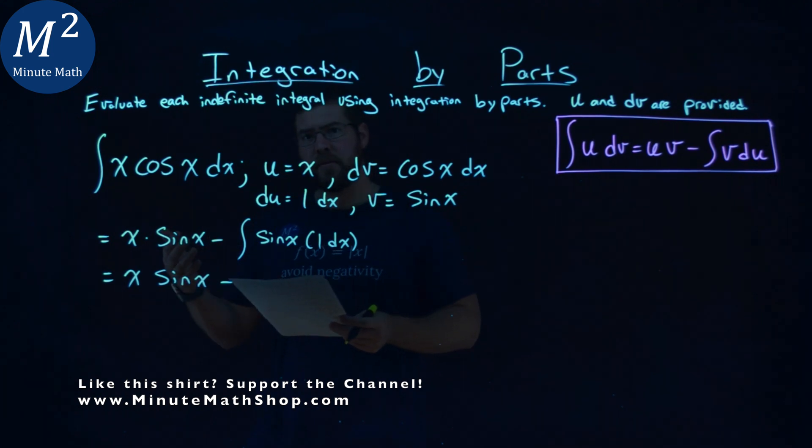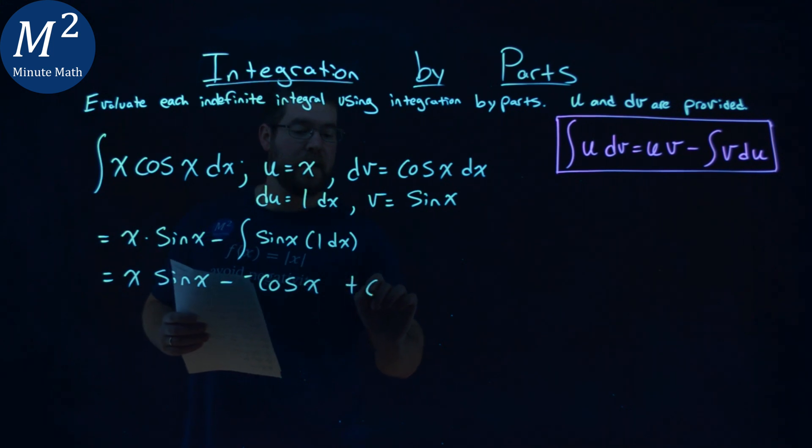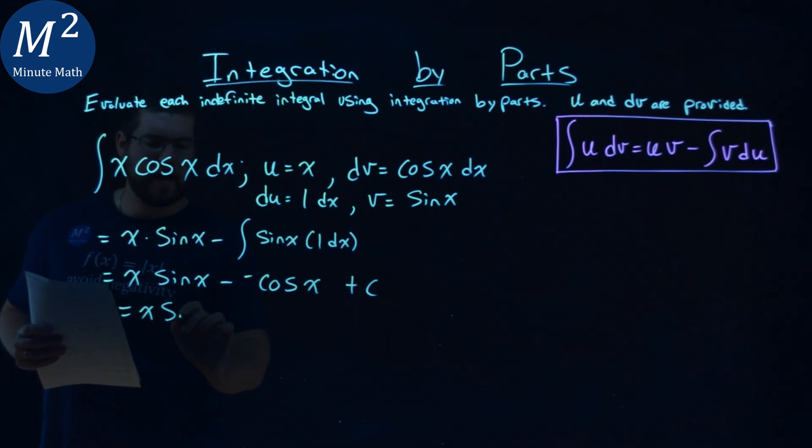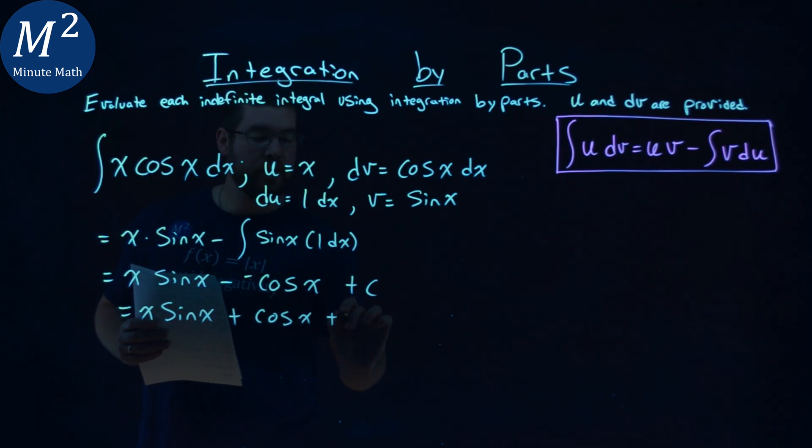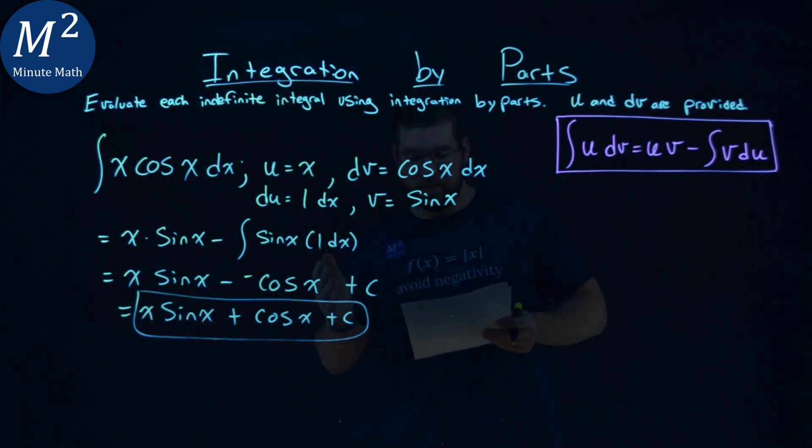Well, it's negative cosine of x. So we have negative cosine of x right here. Don't forget the plus c—we have to have one at the end. Let's just rewrite this to be nice and neat: x sine of x plus cosine of x plus c. And so there we have it. Our final answer is x times the sine of x plus cosine of x plus c.